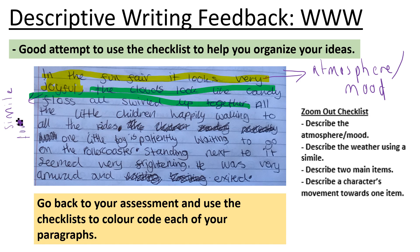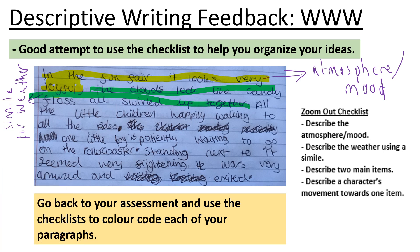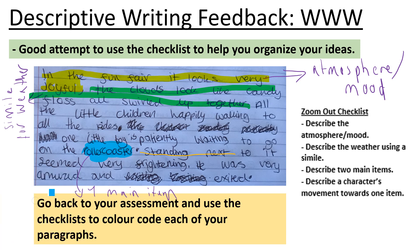Simile for the weather. Next up in my checklist is to describe two main items. Looking at my response it seems I can only see one of the items, which is the roller coaster. So I'm going to label that as one main item. And then finally, describing a character's movement towards one item - I said that he is standing next to the roller coaster and it seemed very frightening, so that is a description of the character's movement or position.